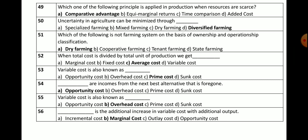Question number 56: Marginal cost is the additional increase in variable cost with additional output. Options: incremental cost, outlay cost, opportunity cost, or marginal cost. The correct answer is marginal cost — any additional increase in cost with additional output is known as marginal cost.